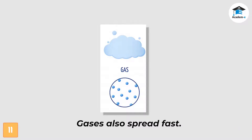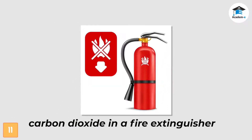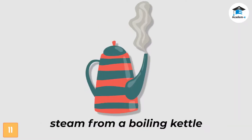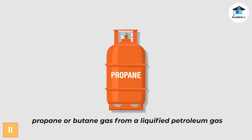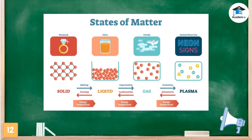This is how the scent of flowers and cologne can spread out inside a room. Air inside a balloon, carbon dioxide in a fire extinguisher, steam from a boiling kettle, propane or butane gas from a liquefied petroleum gas (LPG) tank, and the air you breathe (which is oxygen) are all examples of gases.